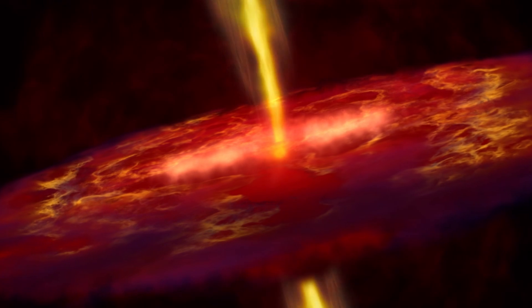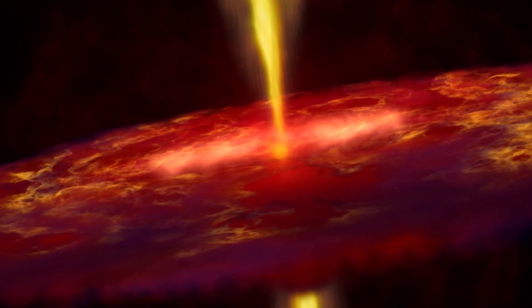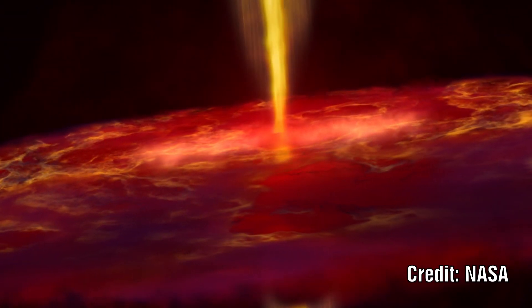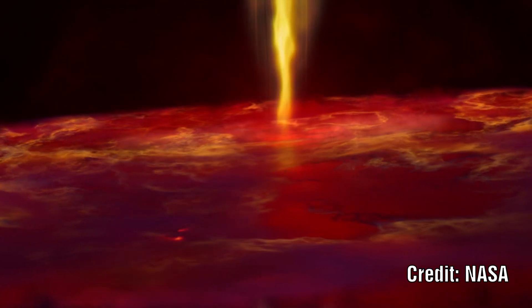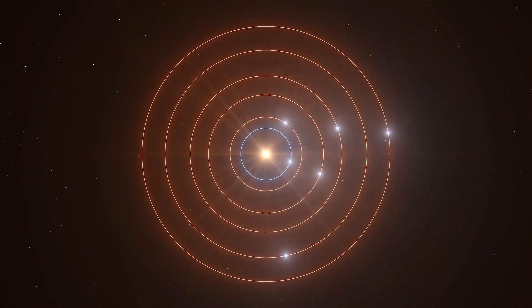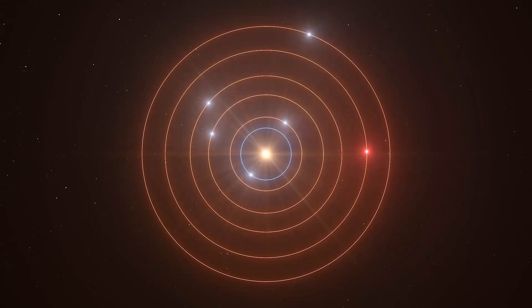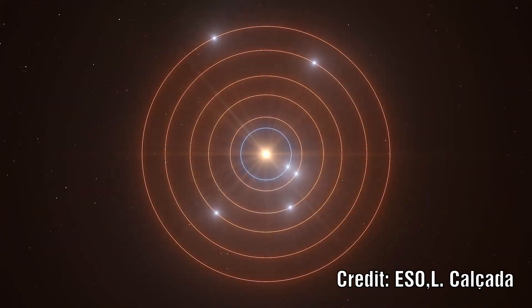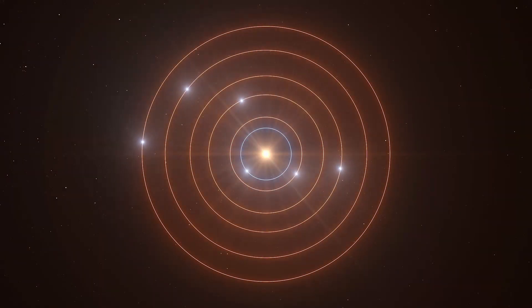This is a problem for the model where the planets form from an accretion disk as the interaction between the disk of the material and the planets should cause a sorting process during the formation which should leave the larger gas planets further out and the rocky bodies closer to the star. The resonance chain implies that this system has not changed in a long long time meaning you cannot explain this by disturbances from outside the system like the capture of one of the bodies or the disturbance by another star.